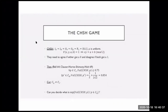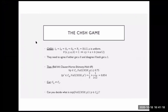The question is: what is the maximum success probability in this game? The interesting thing is that it depends on your model. If you live in a classical world, you have a different maximum success probability than if you live in a quantum world — this is the point of Bell's result. CHSH stands for Clauser, Horn, Shimony, and Holt.